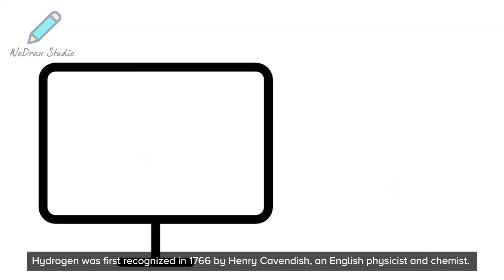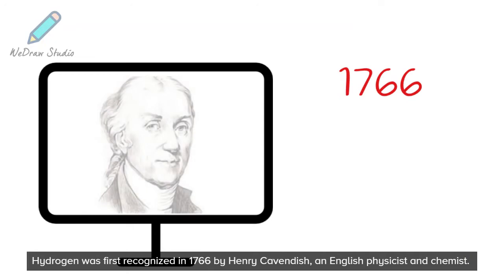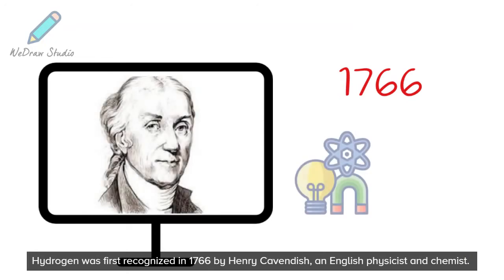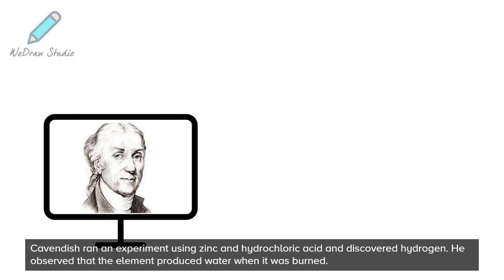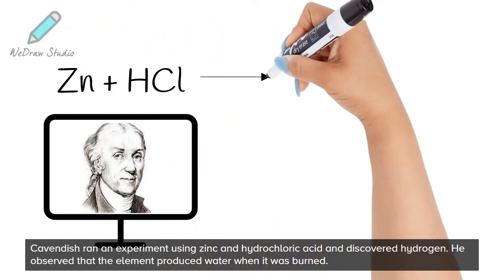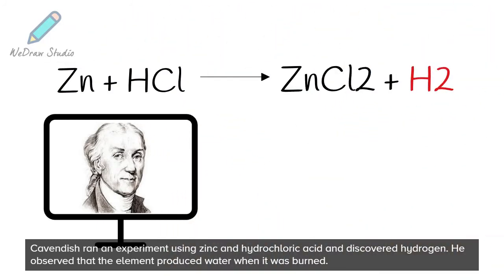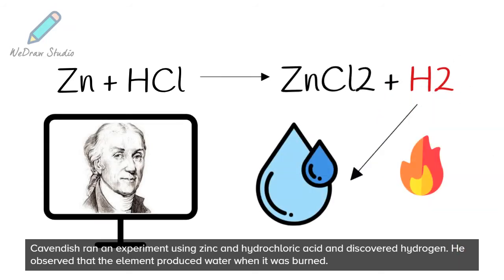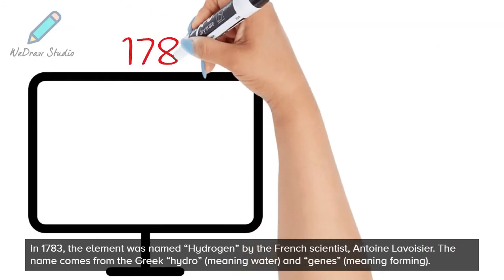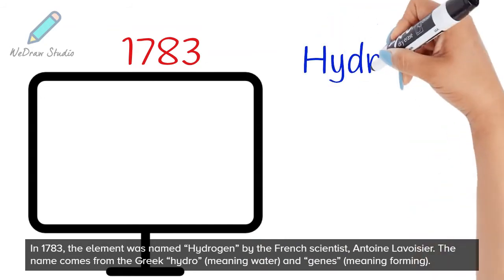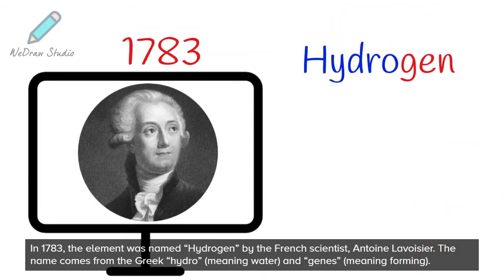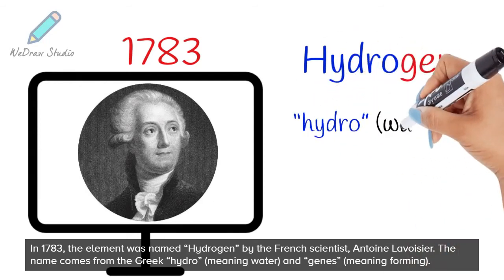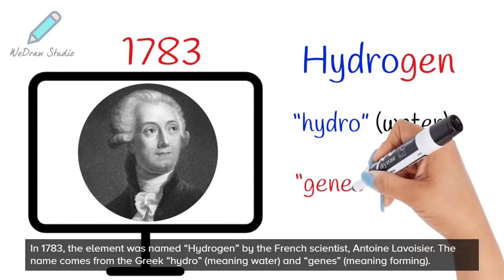Hydrogen was first recognized in 1766 by Henry Cavendish, an English physicist and chemist. Cavendish ran an experiment using zinc and hydrochloric acid and discovered hydrogen. He observed that the element produced water when it was burned. In 1783, the element was named hydrogen by the French scientist, Antoine Lavoisier. The name comes from the Greek hydro, meaning water, and genes, meaning forming.